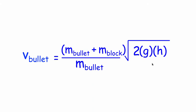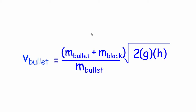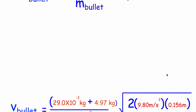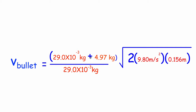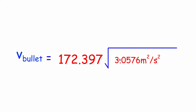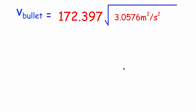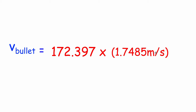Here's our equation: the speed of the bullet equals the mass of the bullet plus the mass of the block, divided by the mass of the bullet, times the square root of 2 times g (9.8 m/s²) times the height the block is raised. Plugging in all the variables — the 29-gram bullet, the 4.97 kg block, g, and h — under the root sign we get 3.056 m²/s², and in front we get 172.397 (kilograms over kilograms, so dimensionless). Taking the square root gives 1.7485 m/s.